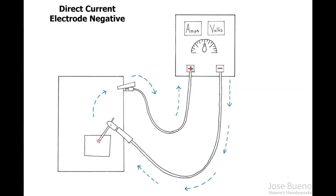So it's everything we learned about DC EP with our ground clamp and electrode cables switched. Now thinking about DC EP, where two-thirds of the heat are focused on the electrode and one-third on the base material - that is also reversed with DC EN. So with DC EN, or direct current electrode negative, two-thirds of the heat are going to be focused on the base metal and one-third on the electrode.